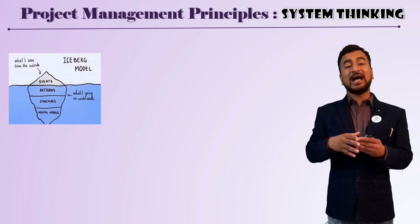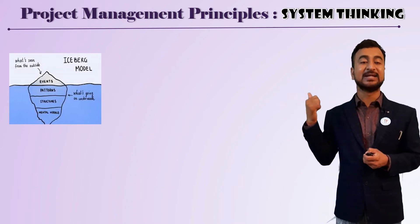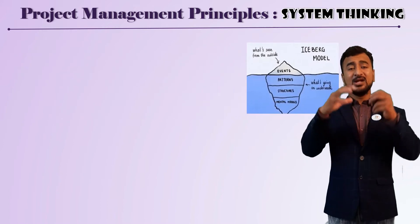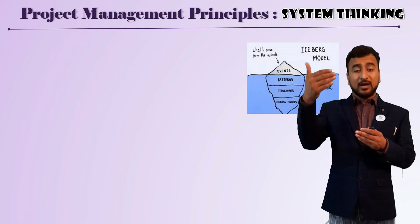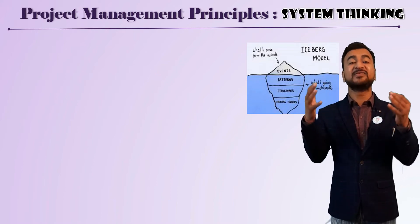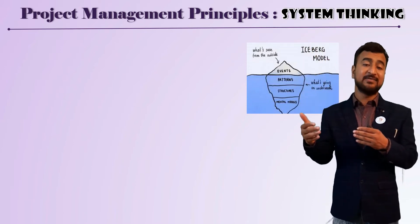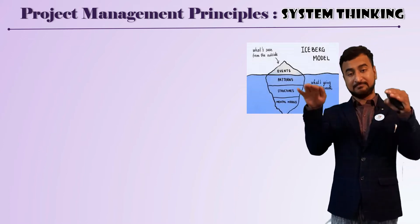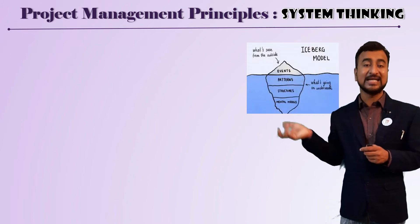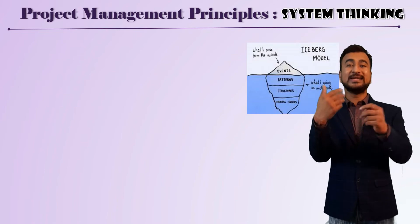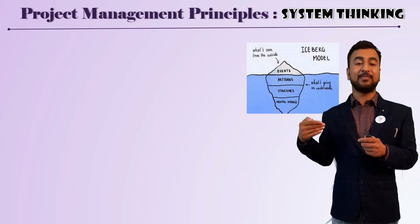In the iceberg model, the tip of the iceberg is all we can see, but there is something much bigger below the surface — you see 30% as the tip but 70% is below the water. In this model, the event is what you can easily identify — something has happened. But you need to understand why it happened: what are the patterns and trends going on? The event is just a trigger point.